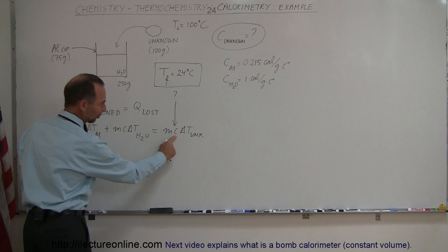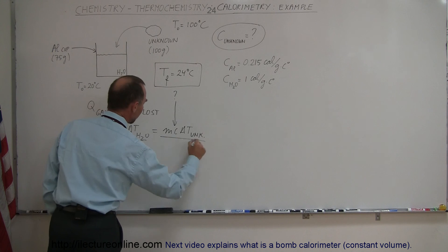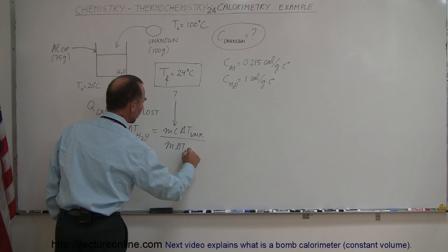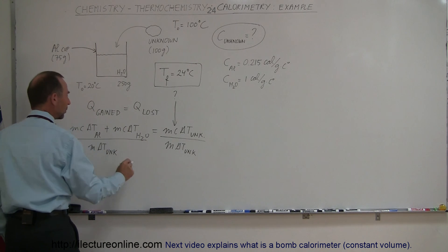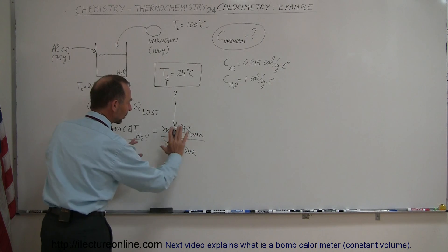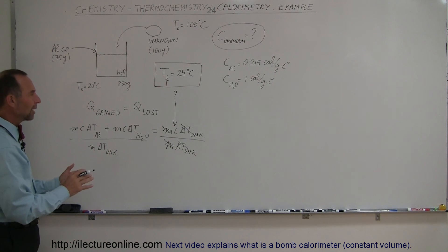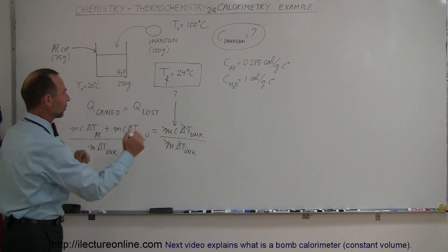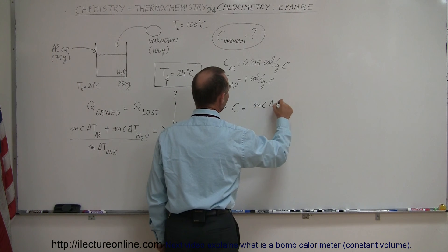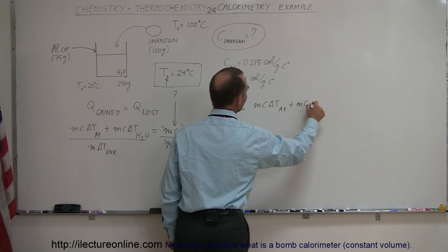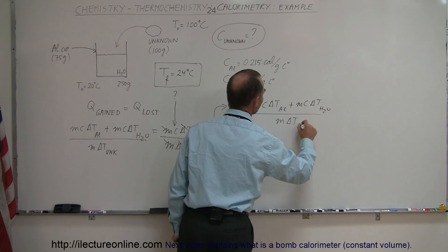Now we want to isolate the specific heat of the unknown. We're going to divide both sides of the equation by the mass and ΔT of the unknown. When we do that, the mass and ΔT of the unknown cancel out on the right side, and all we have left is the specific heat we're looking for. So C equals the M·C·ΔT of the aluminum plus the M·C·ΔT of the water, all divided by the mass and ΔT of the unknown object.